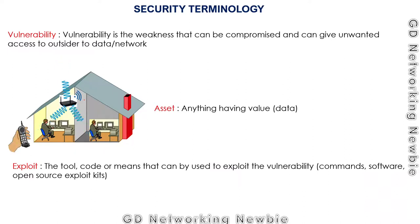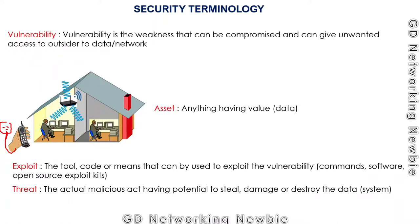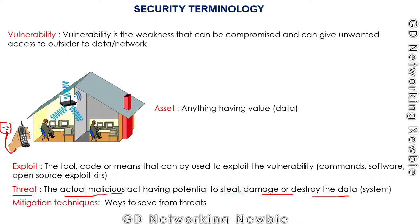Now suppose there is a person who is going to use that tool to exploit the vulnerability of this system. That tool combined with someone who can take advantage of it is known as a threat. In the security world, a threat is defined as the actual malicious act having the potential to steal, damage, or destroy the data or system. The ways to save ourselves from those threats are known as mitigation techniques.